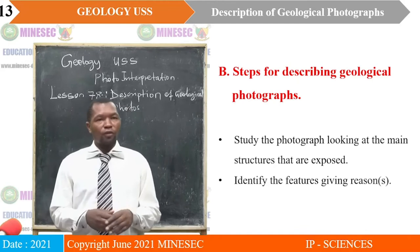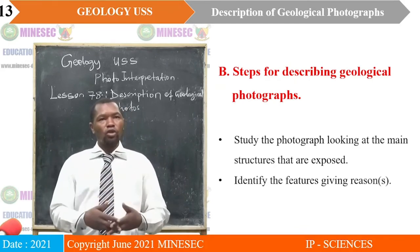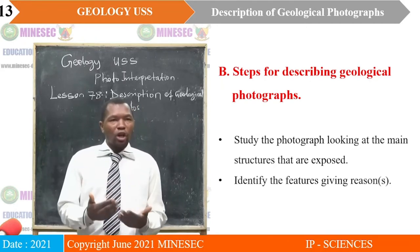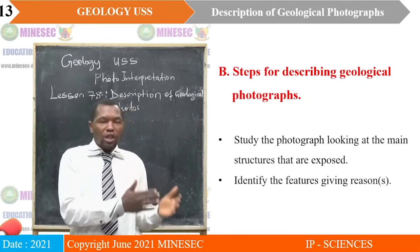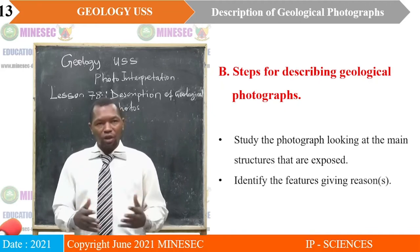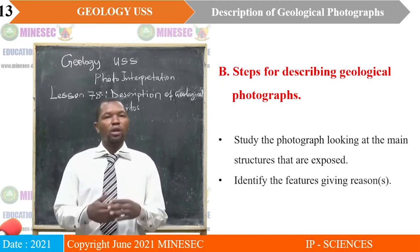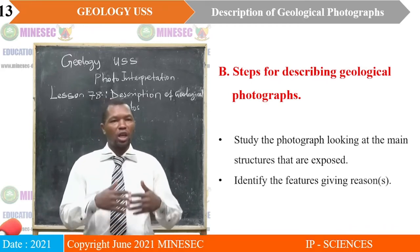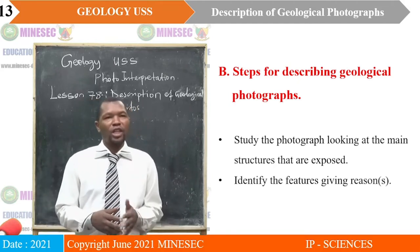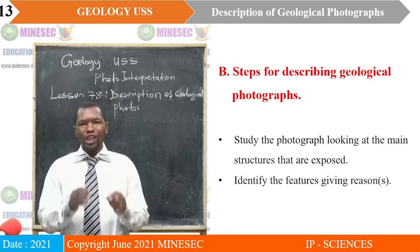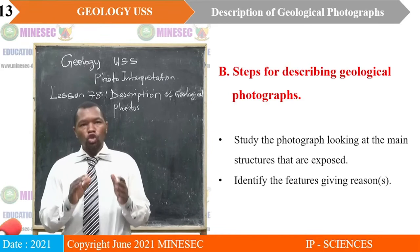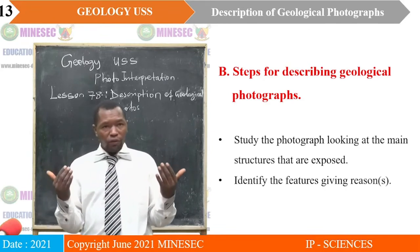We are in part B of our lesson under photo interpretation in geology. Those photos help us understand that there are criteria you will use to identify and describe whatever feature is represented in a geological photo. The steps for describing geological photographs: the first step, you study the photograph, looking at the main structures that are exposed. In studying a photograph, you need to orient it and take note of the scale — that is why we say map work.